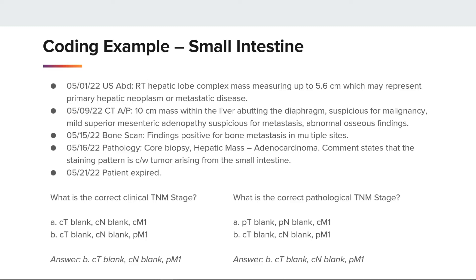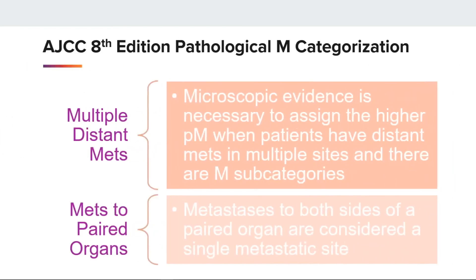Microscopic evidence is not needed of both sites to apply pM1. For patients who have distant mets in multiple sites and have a cancer type where the M subcategories distinguish between one or more metastatic sites, macroscopic confirmation of one site is necessary to assign the higher pM subcategory. For example, if we have a lung case that has liver and bone mets and the liver was biopsied and positive for mets, you may assign pM1C — each metastatic site does not need to be biopsied. We also note that metastases to both sites of a paired organ are considered a single metastatic site.